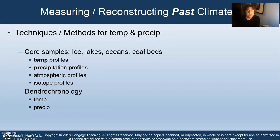We can also look at methods that involve tree stumps, or dendrochronology, and we can look for temperature and precipitation in those as well. Each of these methods has different strengths and weaknesses, so we're going to briefly go over that.